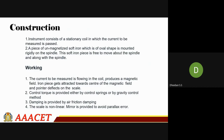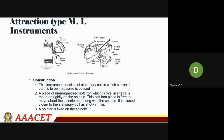So this instrument will consist of a stationary coil in which the current to be measured will be passed. Over the stationary coil, the current will be passed — and this current is what you have to measure. A piece of unmagnetized soft iron of oval shape is mounted rigidly on the spindle. If I show the diagram you can clearly understand this type of MI.